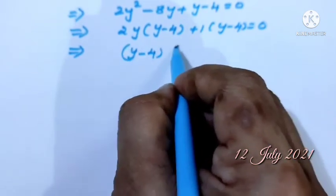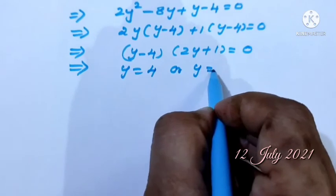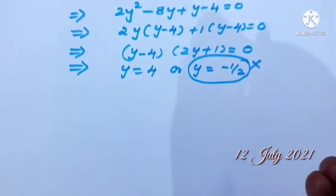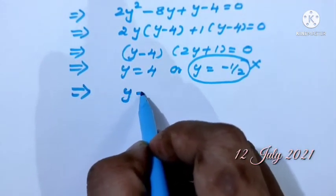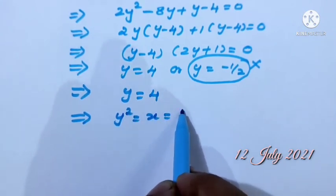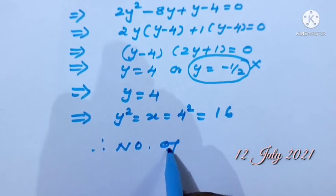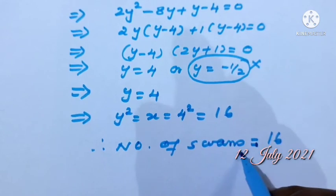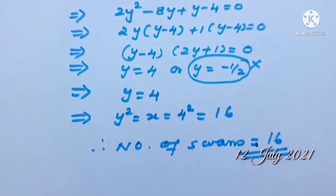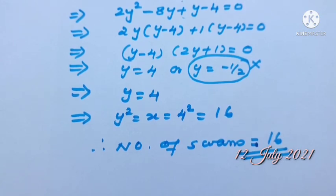For 2Y squared minus 7Y minus 4 equals 0, factors of 2 times 4 equals 8 are minus 8 and plus 1. Splitting: 2Y squared minus 8Y plus Y minus 4 equals 0. Common: 2Y(Y minus 4) plus 1(Y minus 4) equals 0, giving (2Y plus 1)(Y minus 4) equals 0. So Y equals 4 or Y equals minus 1 by 2. Taking Y equals 4: Y squared equals X equals 16. The total number of swans is 16. Remember to use the substitution root X equals Y for such questions. Today's class ends here — thank you.